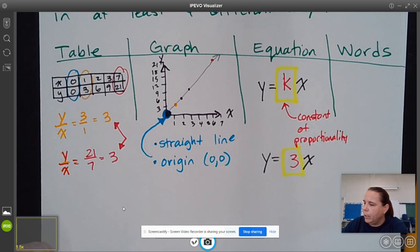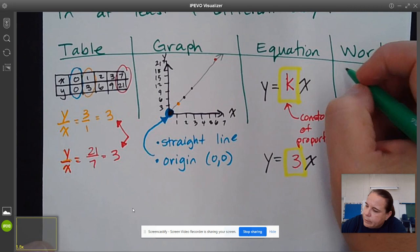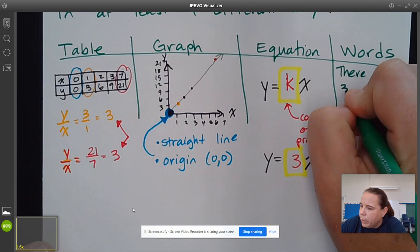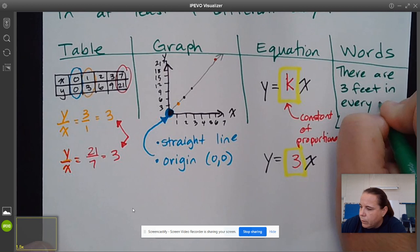But we also might be able to show it in words. So we could say something like there are 3 feet in every yard. So measurement, 3 feet in every yard.